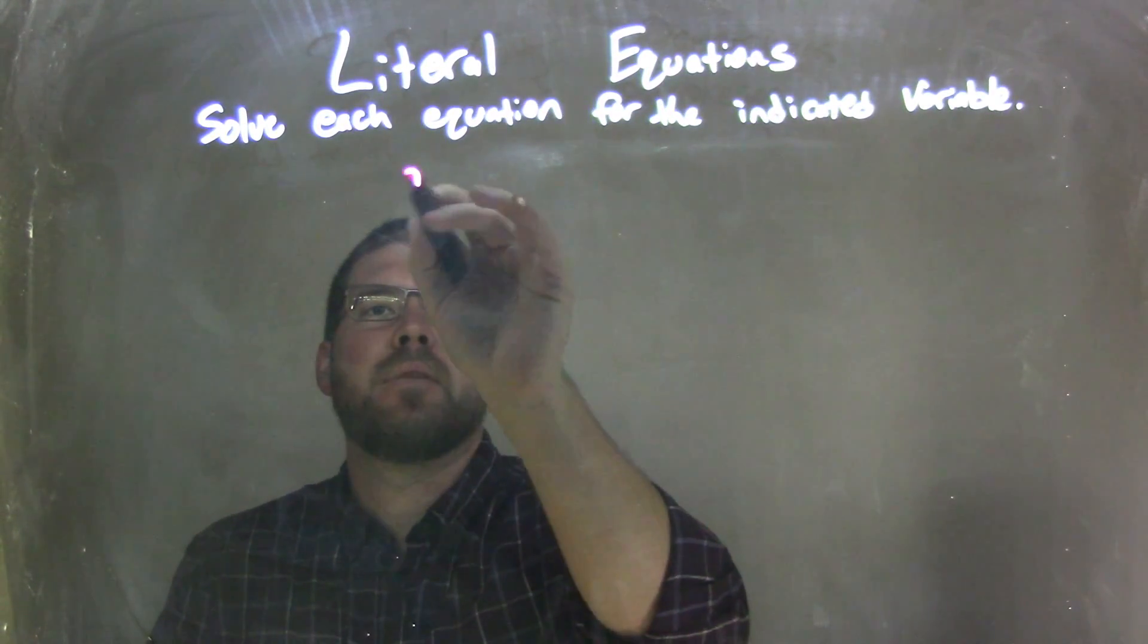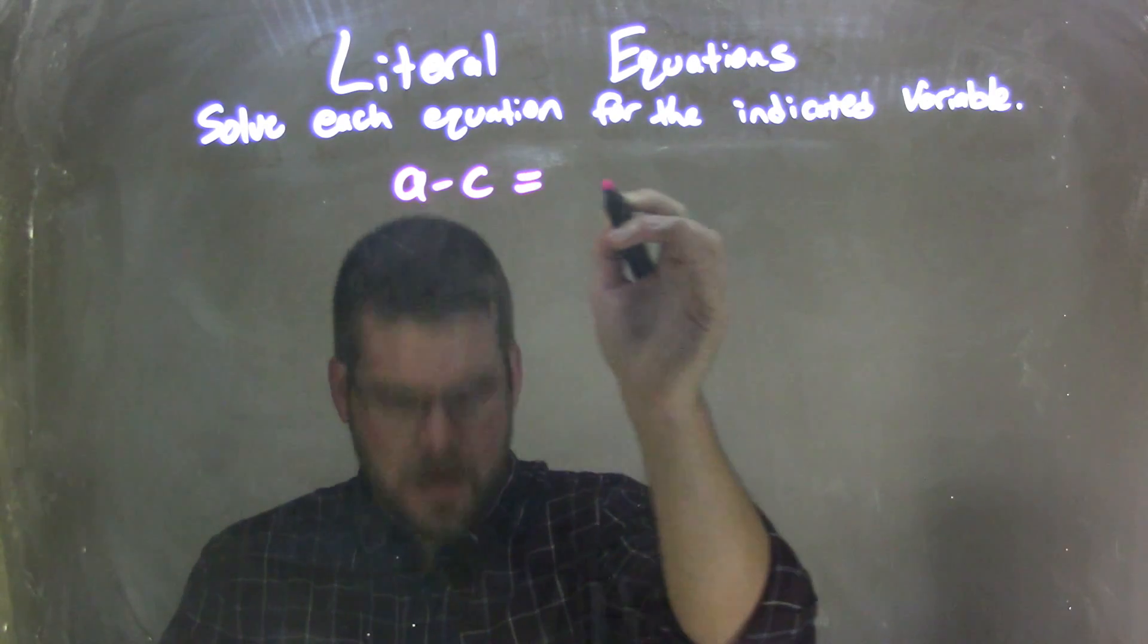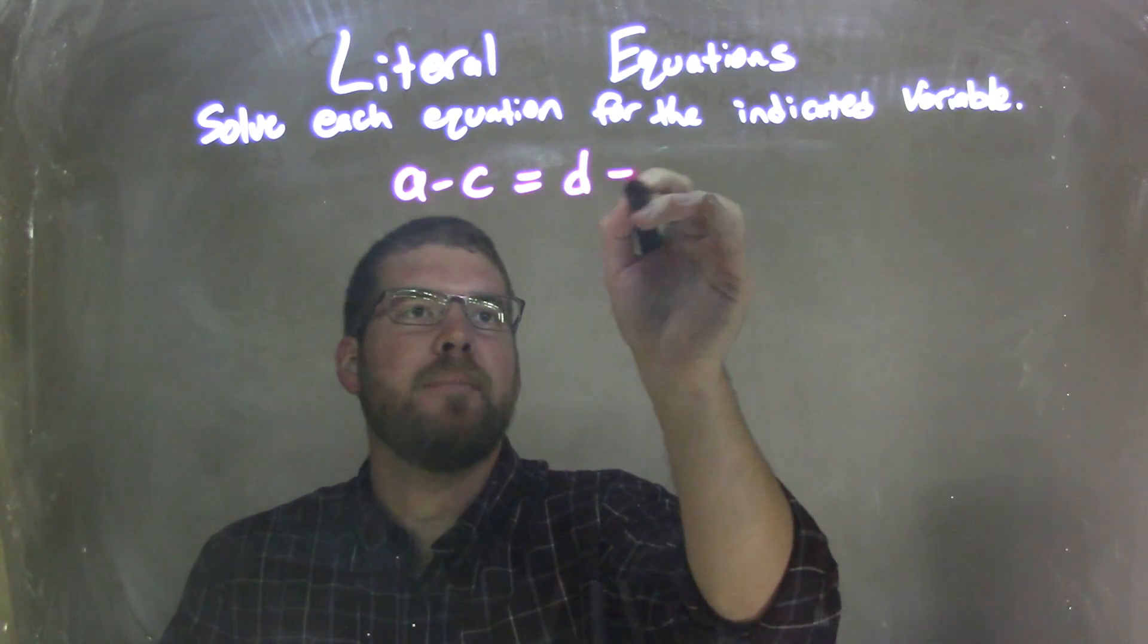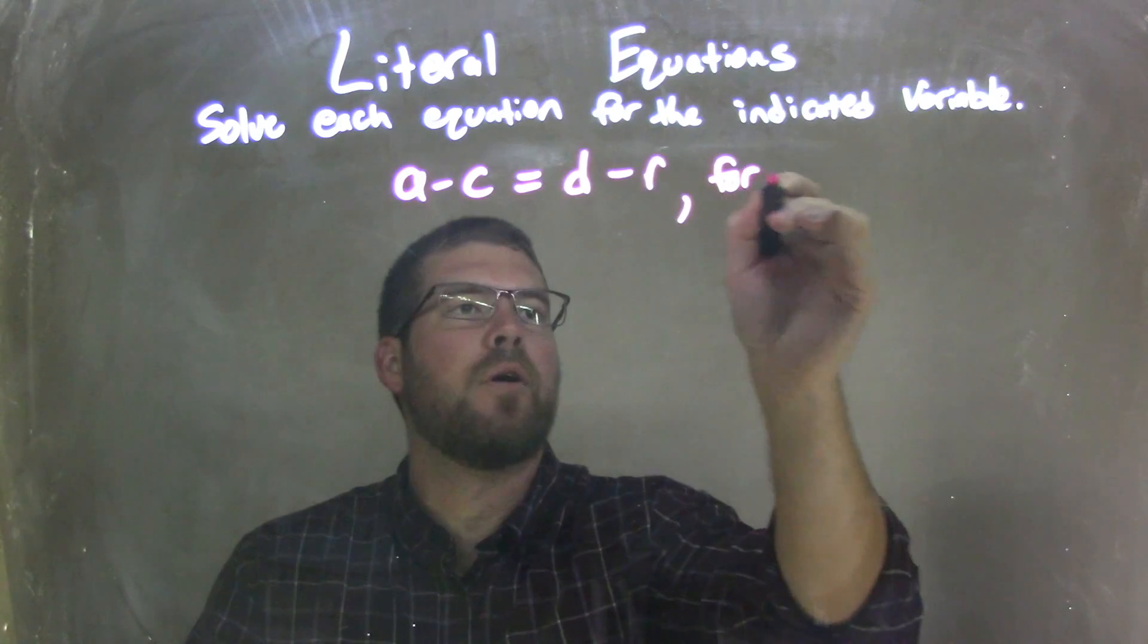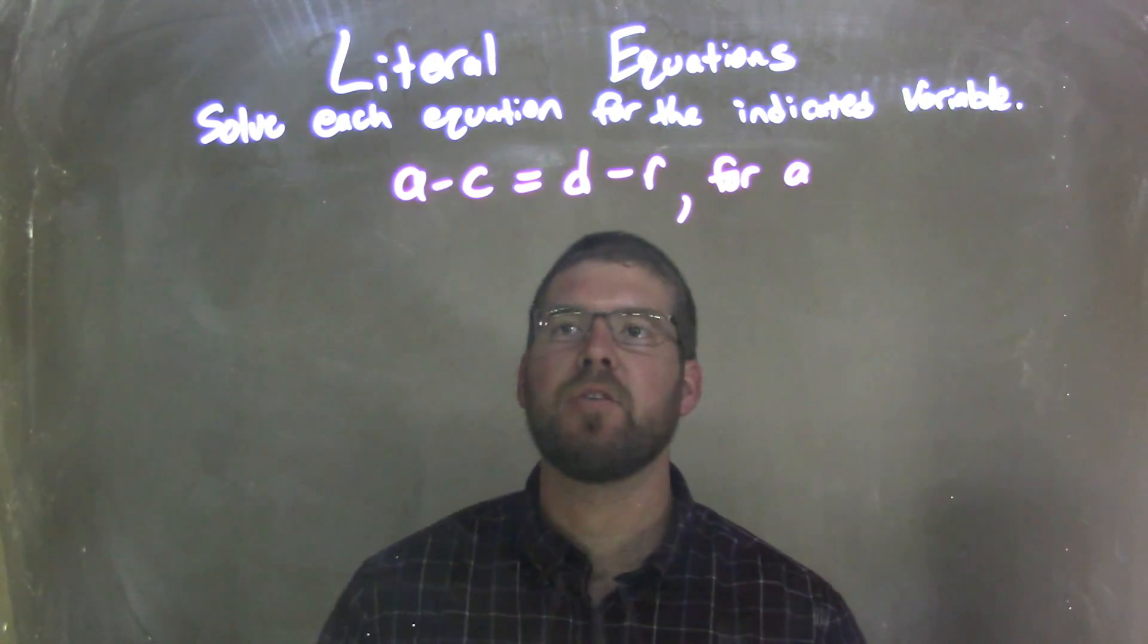So if I was given this equation, A minus C equals D minus R, and we're going to solve that for A.